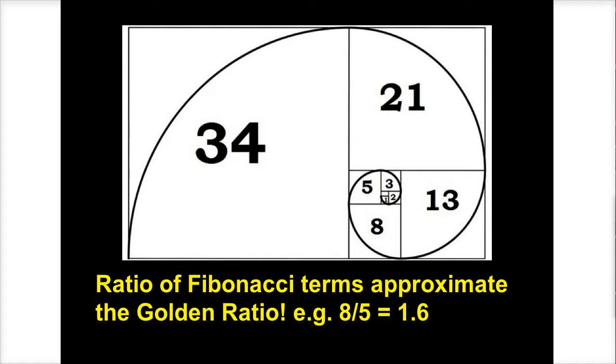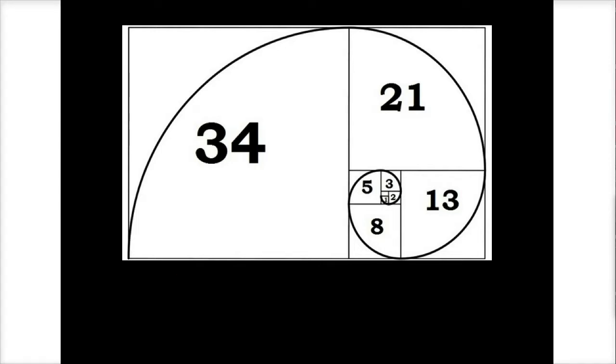But if you were to take the Fibonacci sequence and form a series of squares as shown in this pattern, it creates an incredible spiral like structure. And the very interesting thing about this is that it's found all throughout nature.